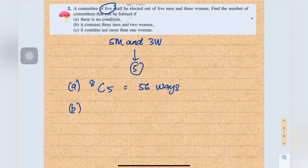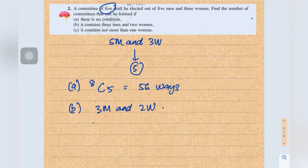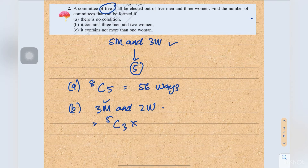Part B: the committee contains three men and two women. From five men choose three (5C3), times from three women choose two (3C2). This equals 30 ways.